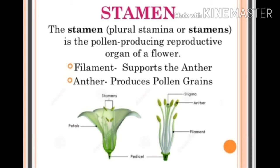Now we will discuss stamen. Stamen — plural stamina or stamens — is the pollen-producing reproductive organ of a flower. It has two parts: filament and anther. The filament is a stalk-like structure that supports the anther. The anther is a knob-like structure that produces pollen grains. You can see in the picture the stalk-like part called filament and the knob-like part called anther.